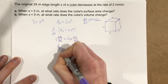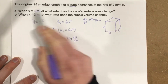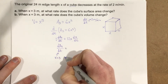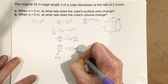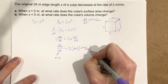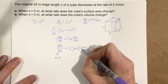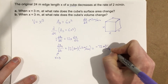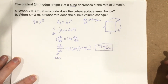We're looking for DAS over DT when X equals 3, and we know DX over DT is negative 2 meters per minute. So we get 12 times 3 meters times negative 2 meters per minute. That gives us 12 times 3 equals 36, times 2 equals 72, so negative 72 meters squared per minute. The surface area is dropping 72 meters squared per minute.